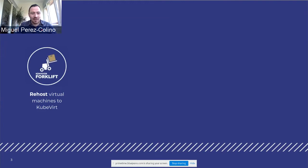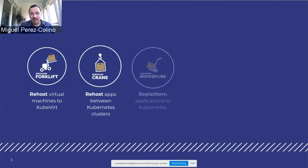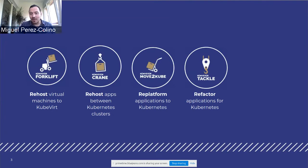The tools we have in Conveyor: Forklift, to move virtual machines from different sources to KubeVirt and Kubernetes; Crane, to move containers from one Kubernetes cluster to another; Move to Kube, if you have an application containerized in Cloud Foundry and want to bring it to Kubernetes; Tackle, to refactor and analyze Java applications to see what changes are needed to put them in containers; and Pelorus, which measures delivery performance based on the DORA metrics.